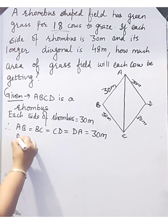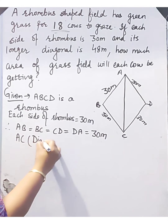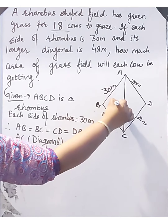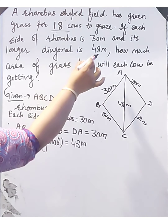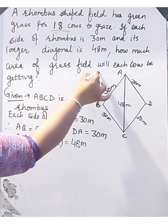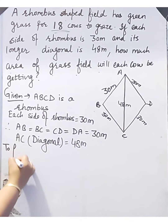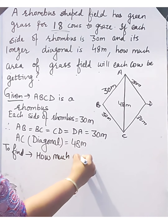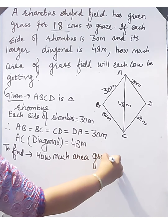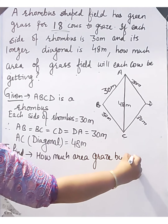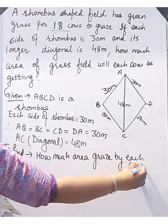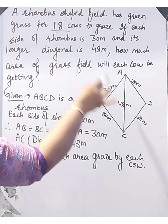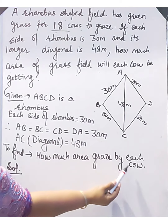The longer diagonal AC is 48 meters. We have to find how much area of the grass field will each cow be getting — that is, the area grazed by each cow.